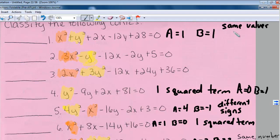So therefore, if they're the same values and the same signs, we have a circle. So they can both be 1, they can both be 2, both be 3, etc.